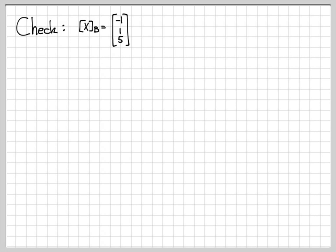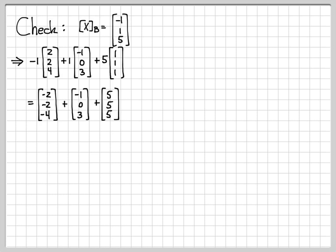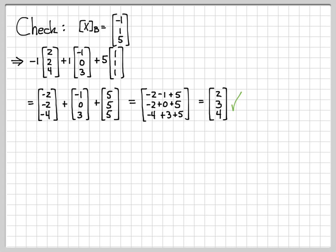That is the answer, but let's do a quick check to make sure we did the math correctly. We've claimed that the coordinates of x with respect to basis b are -1, 1, and 5. So that means if we take negative 1 times b1, plus 1 times b2, plus 5 times b3, we should get x. Negative 1 times the first vector gives minus 2, minus 2, minus 4. One times the second vector just gives the second vector. Five times the vector of 1s gives 5s everywhere. Adding these up: negative 2 minus 1 plus 5 equals 2; minus 2 plus 0 plus 5 equals 3; minus 4 plus 3 plus 5 equals 4. That gives us 2, 3, 4, which is indeed equal to x.